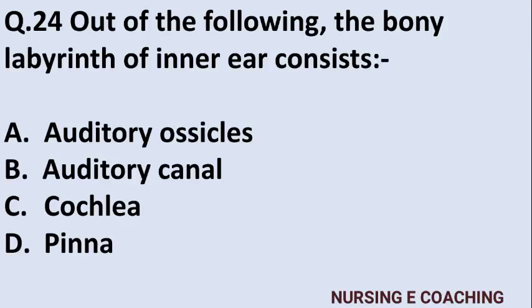Question 24: The bony labyrinth of the inner ear consists of — Option A: auditory ossicles, Option B: auditory canal, Option C: cochlea, Option D: pinna. Answer is C — cochlea.